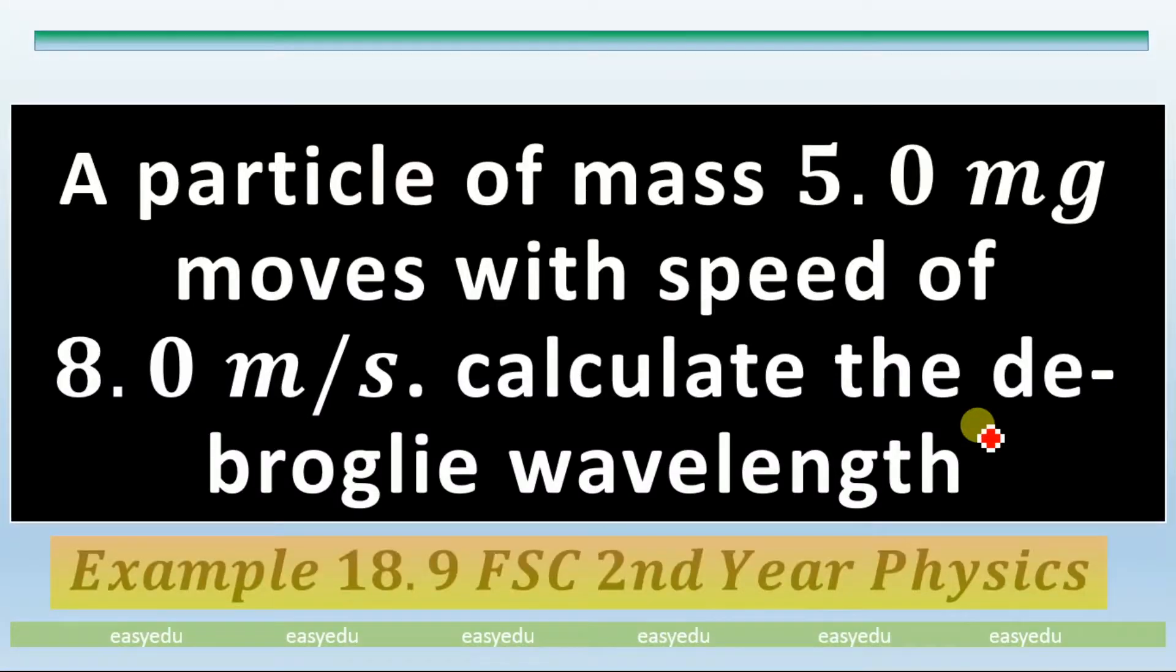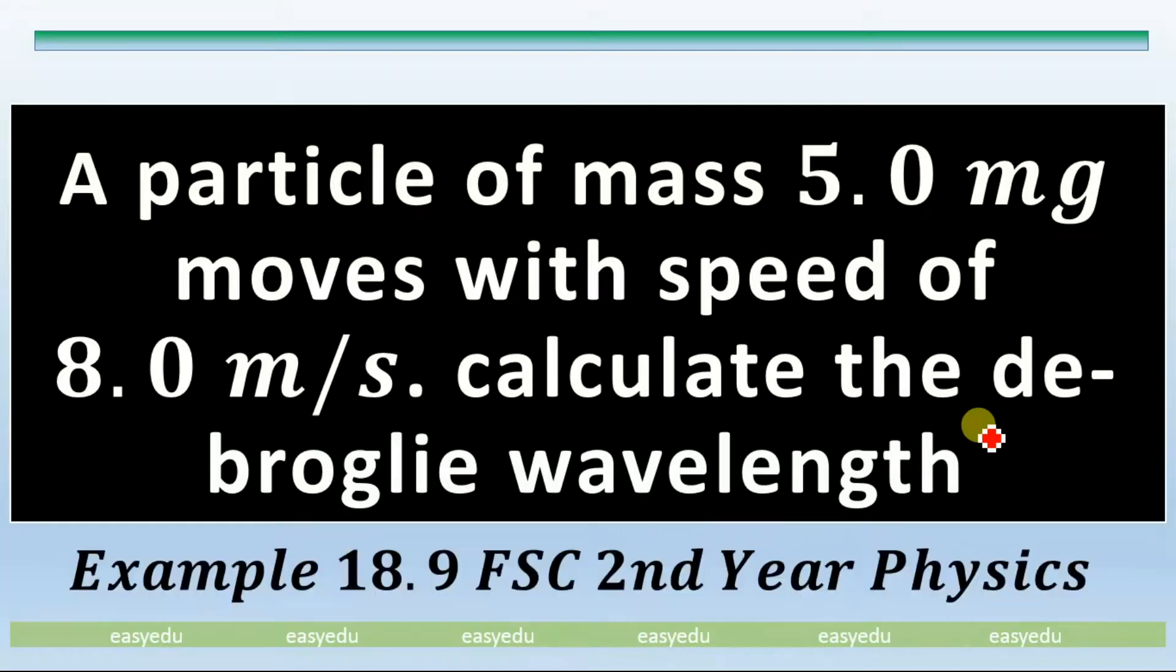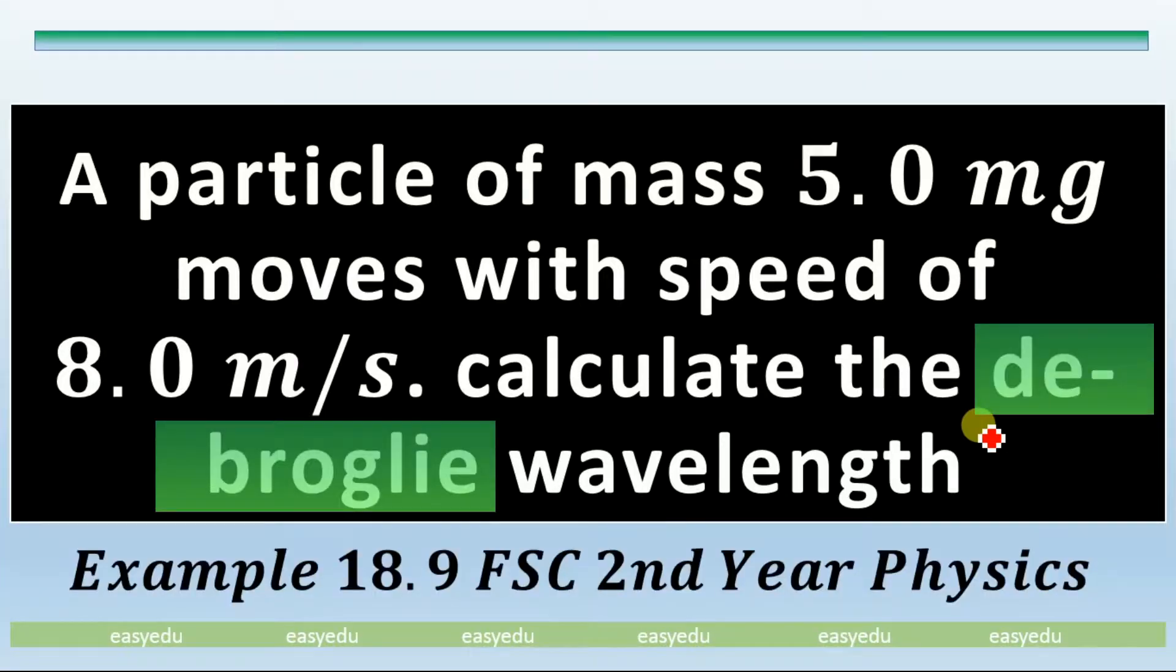Hello viewers, this is example number 18.9 from the FSC Second Year Physics. This numerical is based on the de Broglie hypothesis.